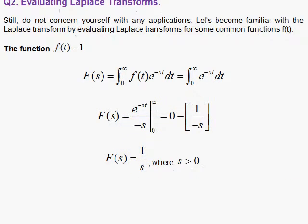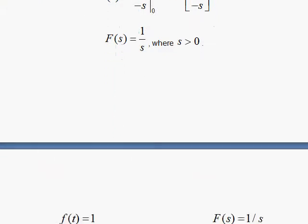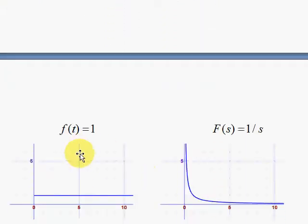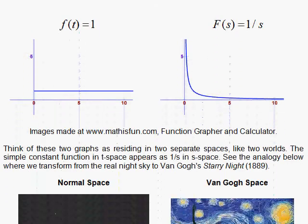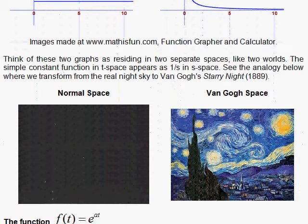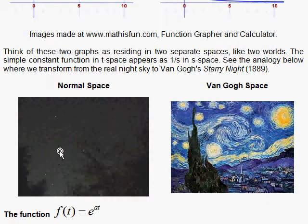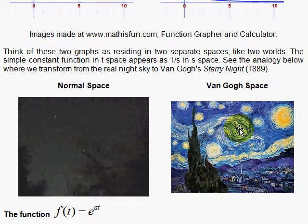What is going on? A constant function in t-space, when we transform to the mysterious space, it's a function 1 over s. So here's a nice analogy. We have normal space, where things look like we expect them to, like stars. And then we have a transform space, the Van Gogh space.